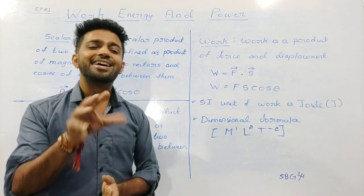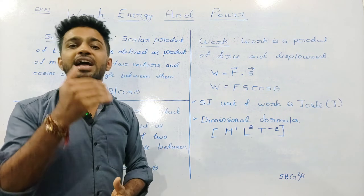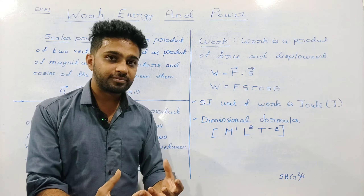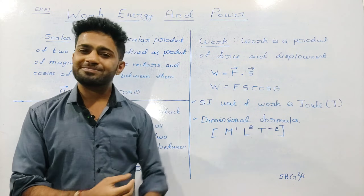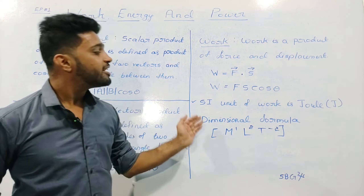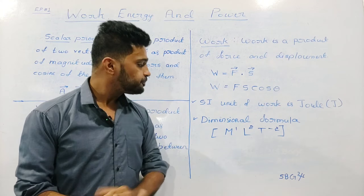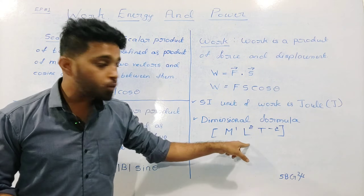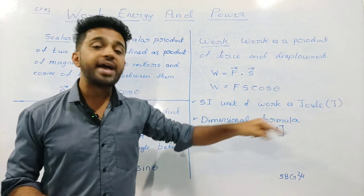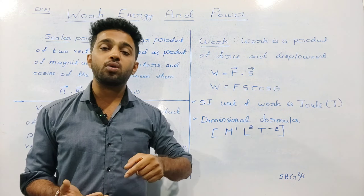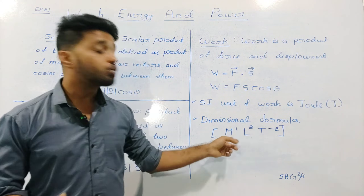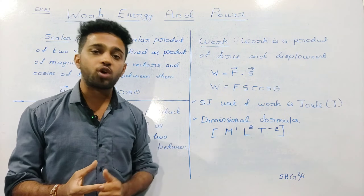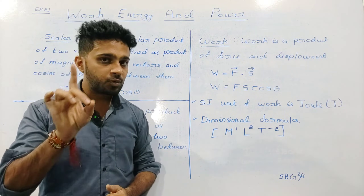The SI unit of work is the Joule. The dimensional formula is M raised to 1, L raised to 2, and T raised to minus 2. You can get one mark for the SI unit and one mark for the dimensional formula.